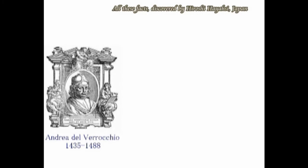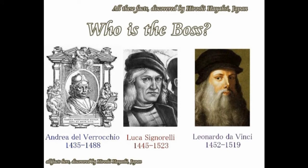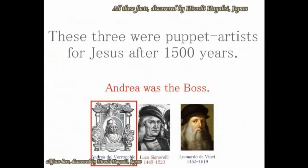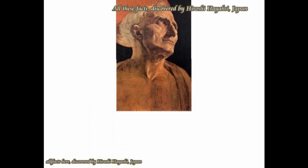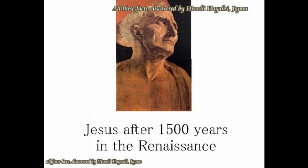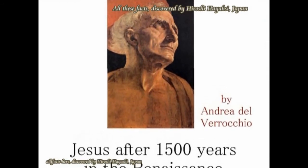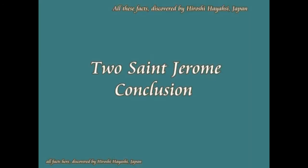一人の別の画家が描いたものを、二人の名前で発表したと私、林博史は判断しています。ここで3人の芸術家の名前が出てきます。アンドレア・デル・ベロッキョ、1435年生まれ。ルカ・シノレリ、1445年。そしてレオナルド・ダ・ヴィンチ、1452年です。アンドレア・デル・ベロッキョとダ・ヴィンチの年齢差は17歳、ルカ・シノレリとダ・ヴィンチの年齢差は7歳ということになります。この中で誰がボスかということになりますが、私はアンドレア・デル・ベロッキョだと判断しています。この1枚のセント・ジェロームの絵がその証拠ということになります。